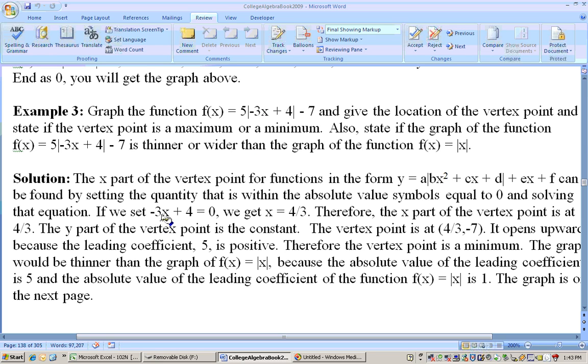The way you can find that vertex point is here's the y part of the vertex point, negative 7. To find the x part of the vertex point, just set the quantity that's inside the absolute value equal to 0. So, if we set negative 3x plus 4 equals 0, we take the 4 to the other side, get negative 3x equals negative 4, then divide through by negative 3 and you get 4 thirds. Well, 4 thirds is actually 1 and 1 third. So, I was off when I said 1.25, it's actually 1.33. So, that's where the vertex point is, 4 thirds, or 1.33, negative 7.